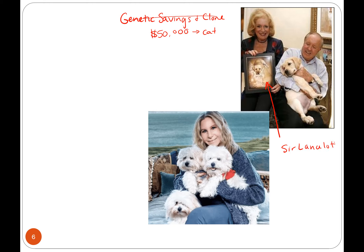This dog is Sir Lancelot. Sir Lancelot was old — he died of cancer in 2009. He was the first commercially cloned dog, and this little baby is called Lancelot Encore. This couple paid $155,000 to clone Sir Lancelot — to clone a yellow lab. But if you have money, you can do things like that.